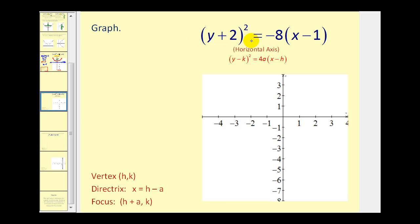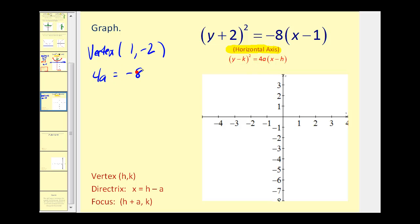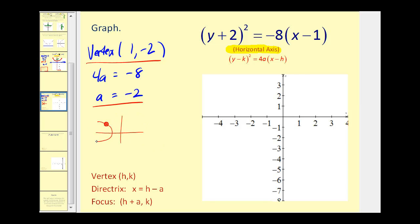Notice now the y part of the equation is being squared, which indicates we're going to have a horizontal axis. Our vertex will still have the coordinates (h, k), so the x-coordinate will be positive 1 and the y-coordinate will be negative 2. We know that 4a equals negative 8, so a equals negative 2. Since we have a negative value of a, our parabola, instead of opening right in the positive direction, will open left in the negative direction.